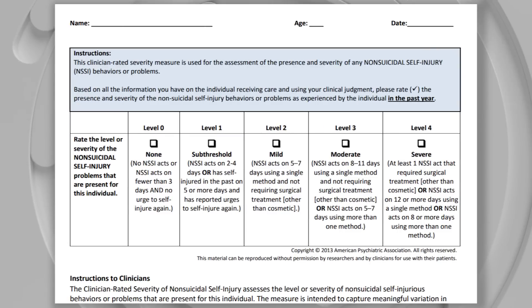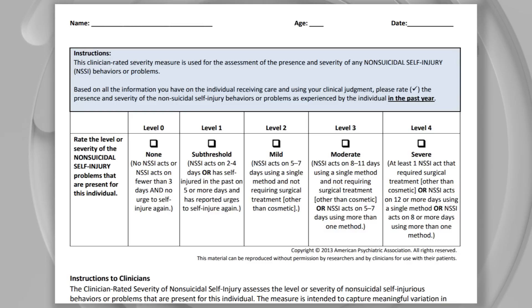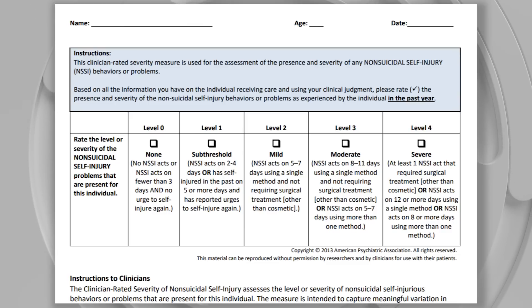Another emerging measure is a rating scale for non-suicidal self-injury, which I found kind of interesting. I did note that if I'm reading it properly, it may not be perfectly suited for all situations since it covers the individual's experience in the past year. But you can find these on the APA's website.